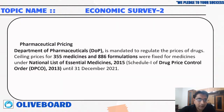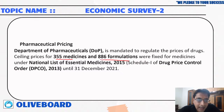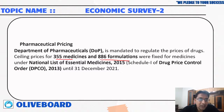Regarding pharmaceutical pricing, the Department of Pharmaceuticals has put a ceiling on 355 medicines and 886 formulations — prices cannot go above these ceilings. These are part of the National List of Essential Medicines and are a part of Schedule 1 of the Drug Price Control Order.